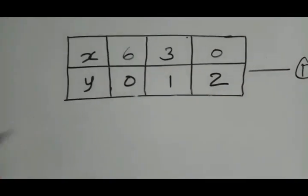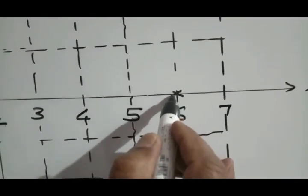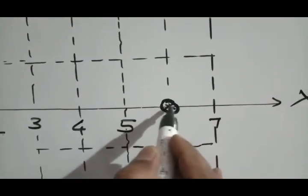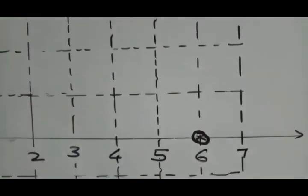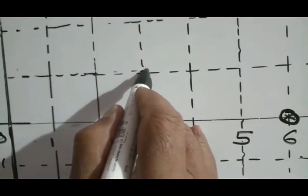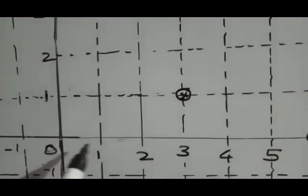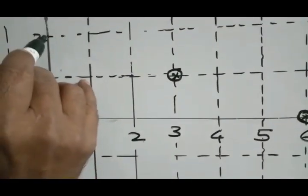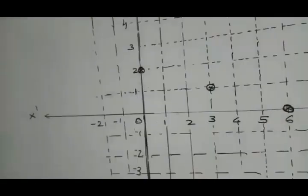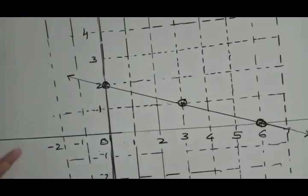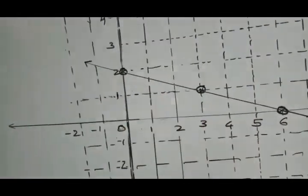Now plot all the points for the first equation. The point 6 comma 0 — since the y-coordinate is 0, it lies on the x-axis. Next, 3 comma 1: x is 3, y is 1. Third point is 0 comma 2: x equals 0 means it lies on the y-axis. Now join all these points with the help of a scale, touching all three points, and draw a line with arrowheads at the ends.